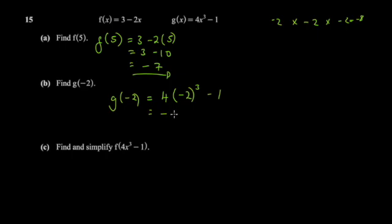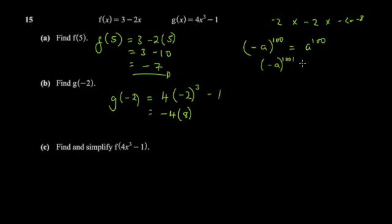So you get negative, and then 4 times 8 gives 32, leaving negative 32 minus 1. For comparison: negative 8 to the power 100 — the negative disappears because it's an even power, giving 8 to the 100. But negative 8 to the power 1001 — the negative survives because it's an odd power. So in this case, we're left with negative 32 minus 1, which gives negative 33.